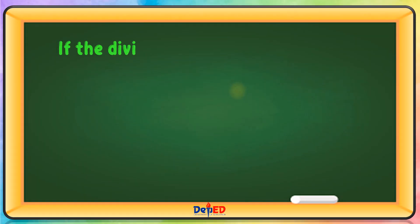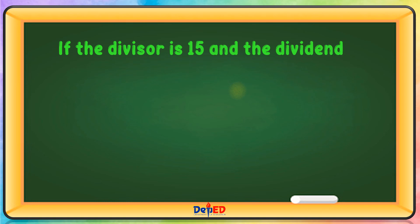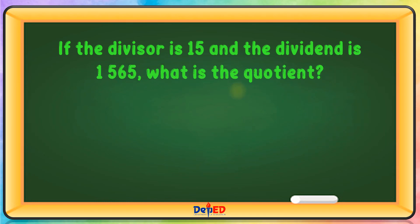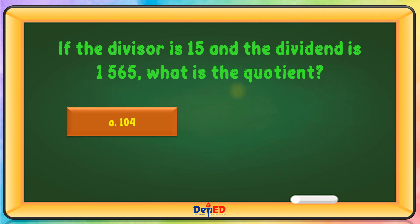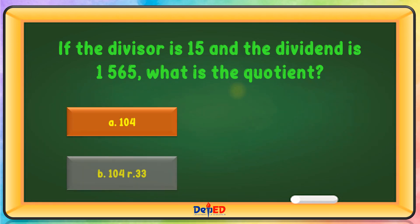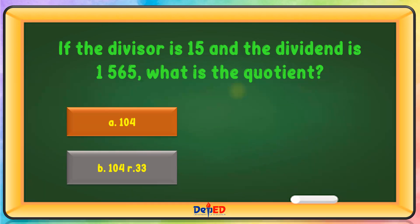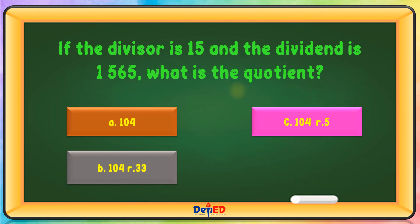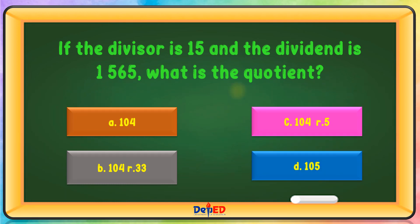If the divisor is 15 and the dividend is 1,565, what is the quotient? A. 104, B. 104 remainder 33, C. 104 remainder 5, or D. 105. The correct answer is C.